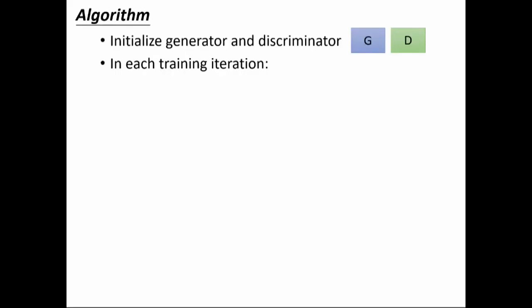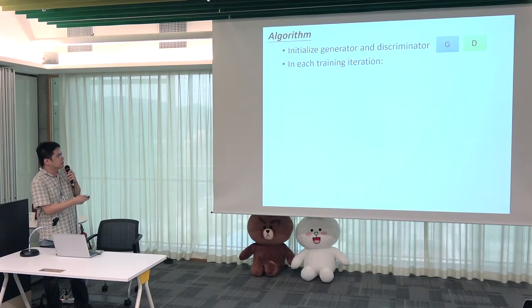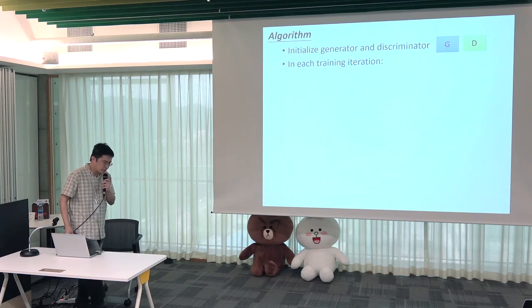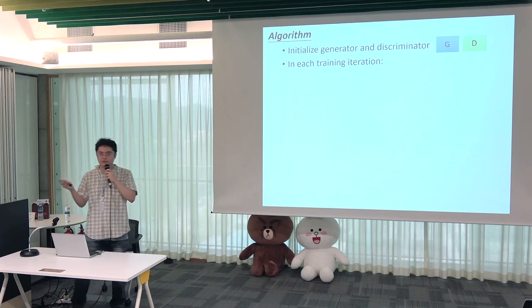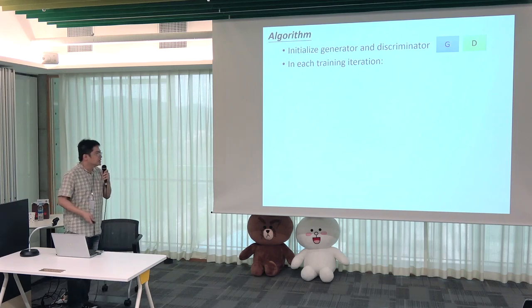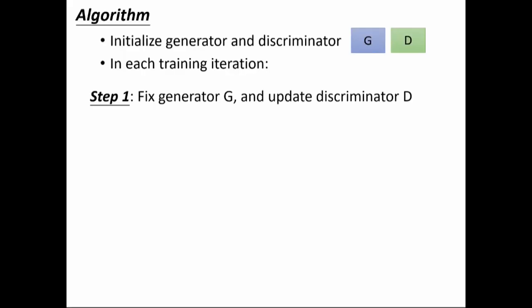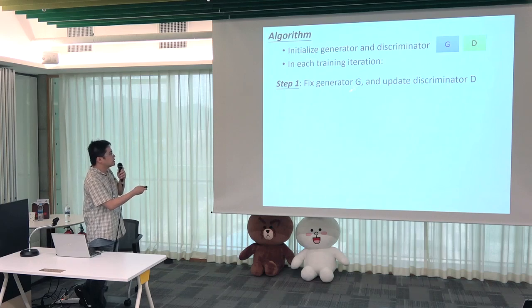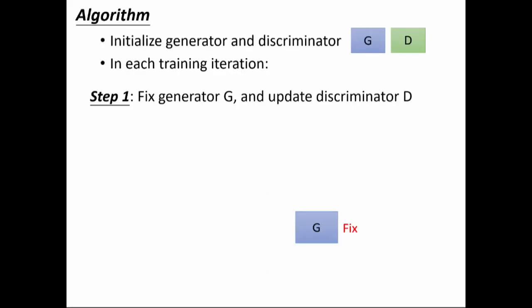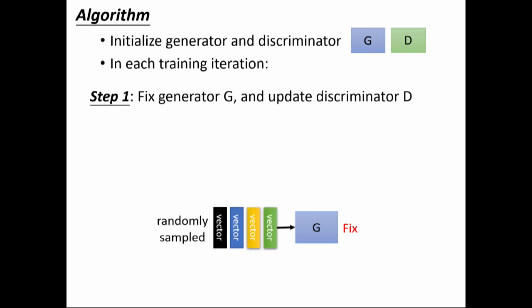Let me show you the algorithm of GAN — how we train the generator with the help of the discriminator. Because both the generator and the discriminator are networks, you have to initialize their parameters. Then in each training iteration there are two steps: in the first step, you fix your generator and only train your discriminator; in the second step, you fix your discriminator and only train your generator.